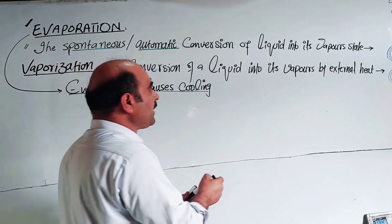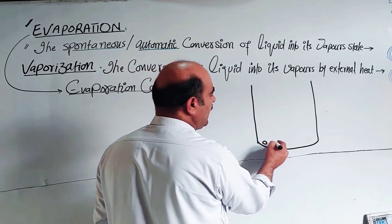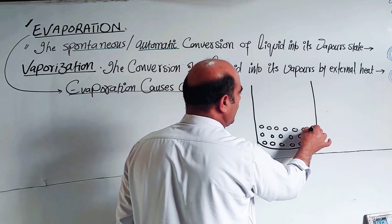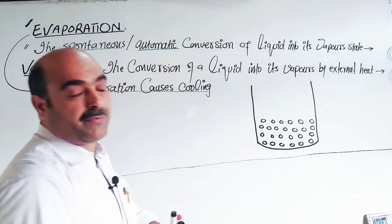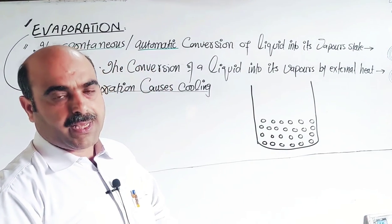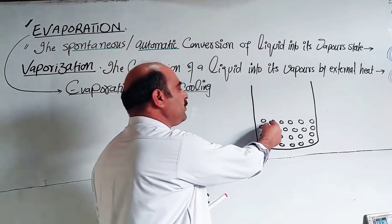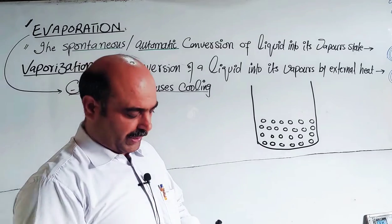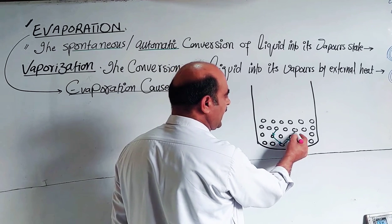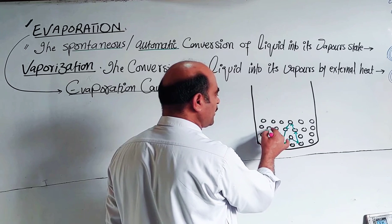Evaporation causes cooling — when evaporation takes place, the temperature goes down. For the diagrammatic representation: consider a container with a liquid inside. All liquids are composed of molecules. For example, water is composed of H₂O molecules. According to the kinetic molecular theory of liquids, liquid molecules are in a state of constant random motion — a zig-zag motion.